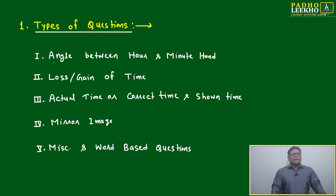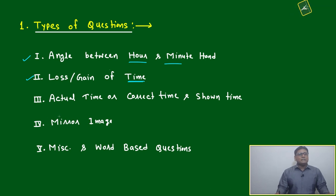The first type of question is angle between hour and minute hand - a very typical and famous question. The second is loss or gain of time, also typical but with more innovative questions you can expect here.